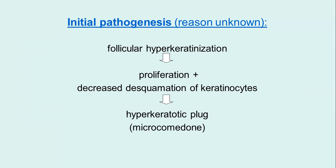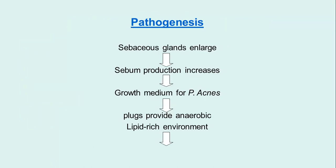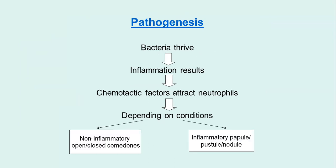Follicular hyperkeratinization — proliferation plus decreased desquamation of keratinocytes — causes a hyperkeratotic plug or micro-comedone. Then sebaceous glands enlarge, sebum production increases, providing a good growth medium for Propionibacterium acnes. Plugs provide an anaerobic lipid-rich environment, bacteria thrive, inflammation results, and chemotactic factors attract neutrophils. Depending on conditions: non-inflammatory comedonal acne or inflammatory papulopustular nodular acne.